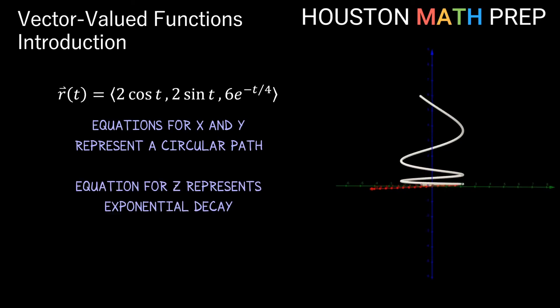So our z component starts positive, but as t gets larger, the value for z gets closer and closer to zero, and we get a path that spirals toward the xy plane, but approaches it more and more slowly as it gets close to it.